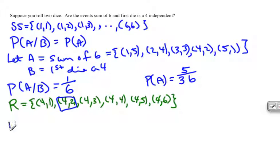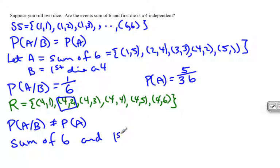One thing we notice in this problem is that the probability of A given B does not equal the probability of A. That means these two events are not independent—you can say they're not independent or they're dependent. So the sum of 6 and the first die being 4 are not independent.